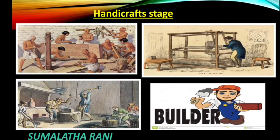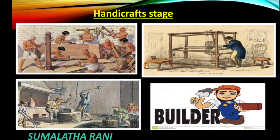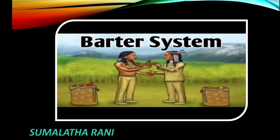In the handicraft stage, agriculturists wanted tools, implements, and houses to live in. To fulfill these requirements, some people engaged themselves in making tools and constructing houses. They were called craftsmen — carpenters, blacksmiths, weavers, and builders came into existence. They carried on production of goods in their houses and supplied tools to agriculturists. In return, agriculturists provided them with their requirements, and this is where the barter system of exchange came into existence.